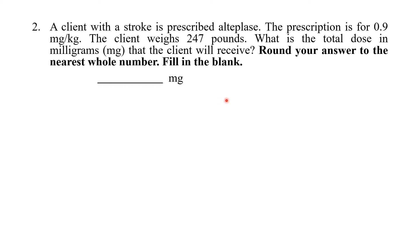So for this stroke patient, alteplase is prescribed at a dose of 0.9 mg per kg. That means for every kg of patient weight, we give 0.9 mg. So we need the patient's weight in kg to calculate the total dose.